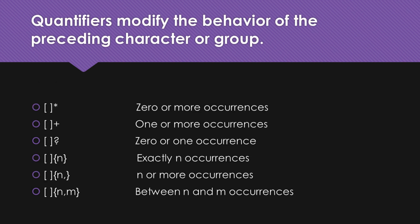Quantifiers are symbols that follow a character or a group in a regular expression, allowing us to define the number of occurrences. Here are some common quantifiers you should know. The asterisk symbol is known as the zero-or-more quantifier. When we use it after a character or a group, it means that the preceding item can occur zero or more times.